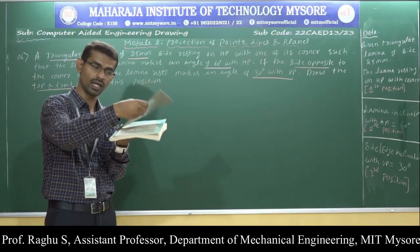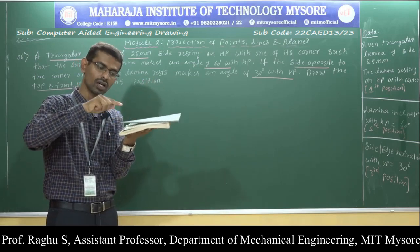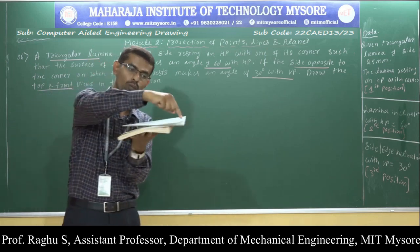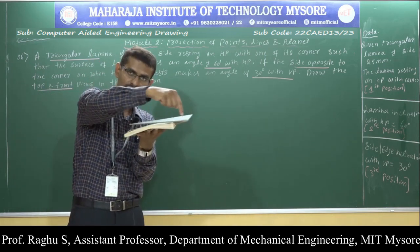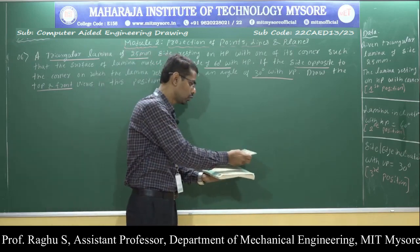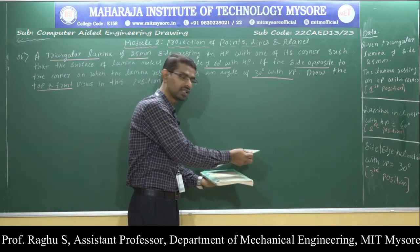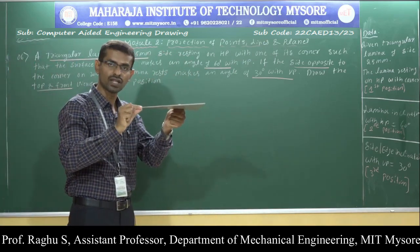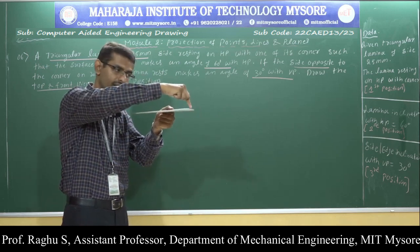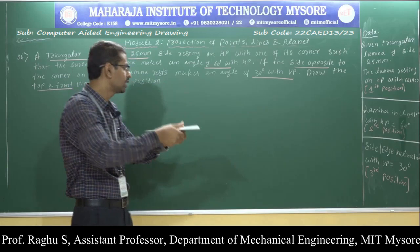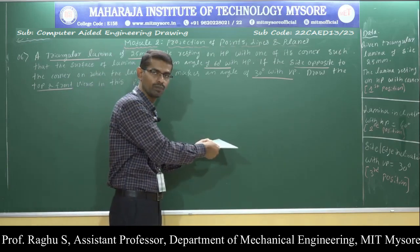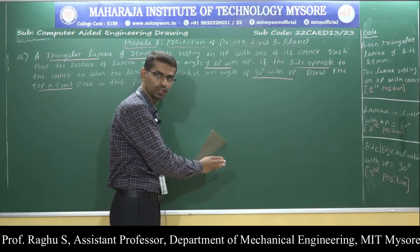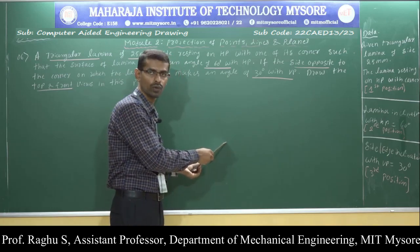There is only one inclination. At the same time, the side opposite to the resting corner is inclined 30 degrees with respect to VP. The corner towards the left side is considered as the resting corner, and the side opposite to that corner makes 30 degrees with VP while the lamina is inclined 60 degrees with respect to HP. We need to draw the top view and front view in this position.